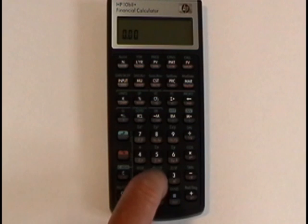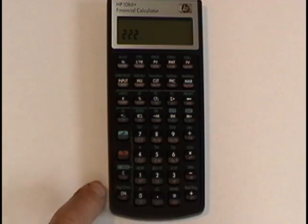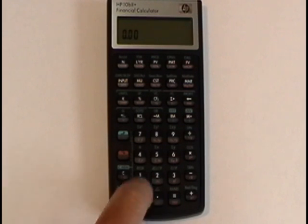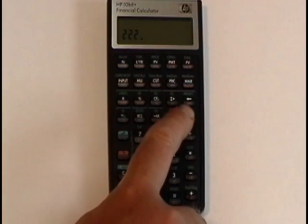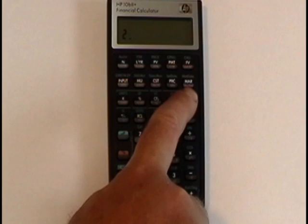If I, for example, just type in 222 and then press the C button once without the gold button first, that'll clear the last entry that I put in. You also have a backspace button right here. Works just like a computer keyboard.